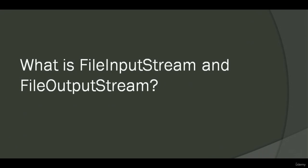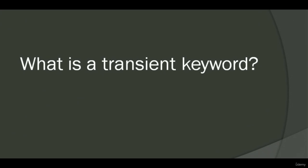How to set permissions to a file in Java? We can alter the permissions to a file in Java using the FilePermission class. This class contains permissions related to a directory or a file; we need to set the permissions related to the file path. What is a transient keyword? The transient keyword is used to avoid the serialization process. This means if a variable is declared as transient, we cannot serialize it and cannot write or return its value.